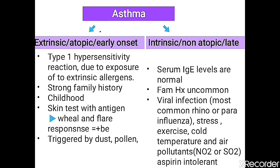Extrinsic atopic or early onset asthma is a type 1 hypersensitivity reaction. It occurs due to exposure to extrinsic allergens and has a strong family history, occurring mostly in childhood because it is hereditary. Skin testing with antigen gives a wheal and flare response — a positive skin test confirming atopic asthma. It is triggered mostly by dust, pollen, or other extrinsic allergens.